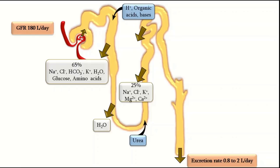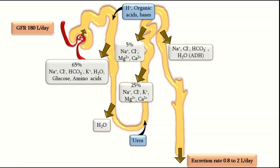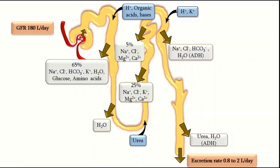The early portion of the distal convoluted tubule reabsorbs sodium, chloride, magnesium and calcium — about 5 percent of the filtered sodium load. The late part of the distal convoluted tubule and the collecting ducts reabsorb sodium chloride, bicarbonate and water, but this part is impermeable to water and becomes permeable only in the presence of anti-diuretic hormone. From the medullary collecting duct, urea and water are reabsorbed, again only in the presence of anti-diuretic hormone; in its absence, this portion is impermeable to water.